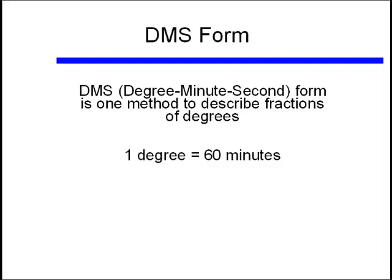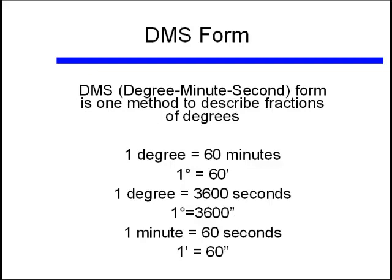One degree is equal to 60 minutes. We can also write this using symbols: 1 degree symbol equals 60 single quote. One minute is broken up into 60 seconds. The minute is a single quote, but the seconds are designated by a double quote. If one degree is equal to 60 minutes, and one minute is equal to 60 seconds, then we can also determine that one degree is equal to 3600 seconds. And we will be using these to do our conversions.